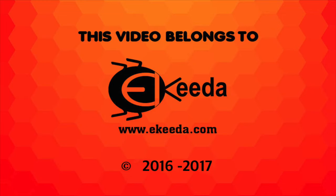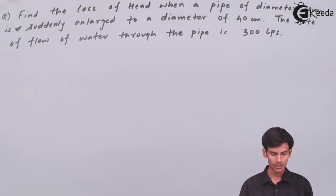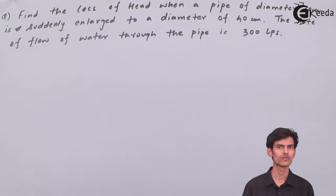The question is: find the loss of head when a pipe of diameter 30 centimeters is suddenly enlarged to a diameter of 40 centimeters. The rate of flow of water through the pipe is 300 liters per second. So the question is of sudden enlargement of pipe and the discharge rate is 300 liters per second. We need to find the loss of head.